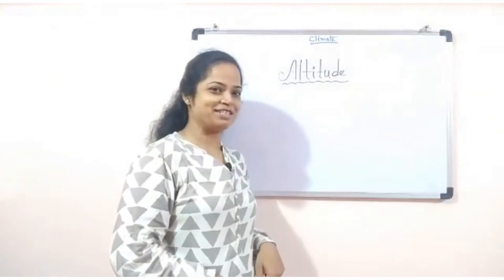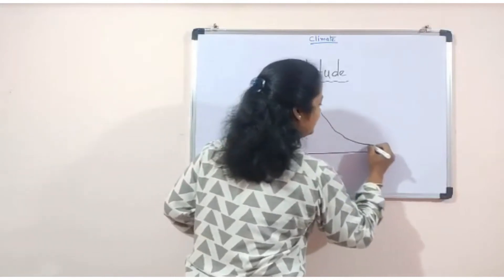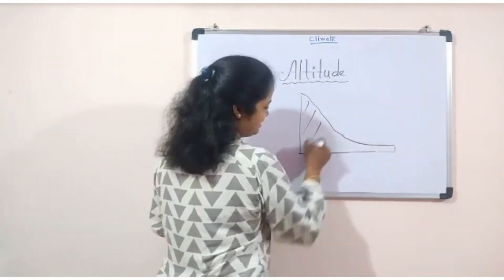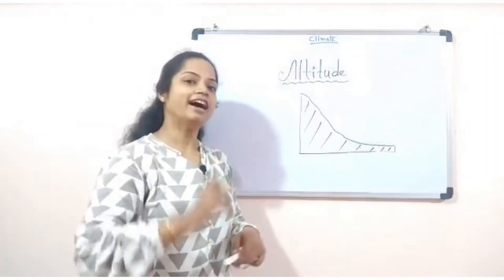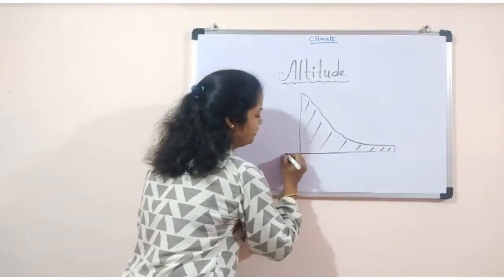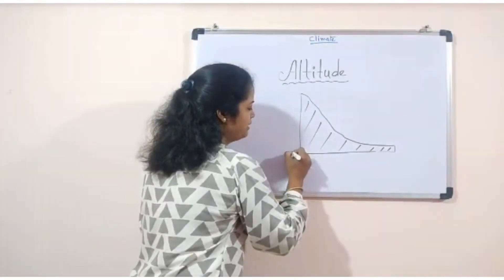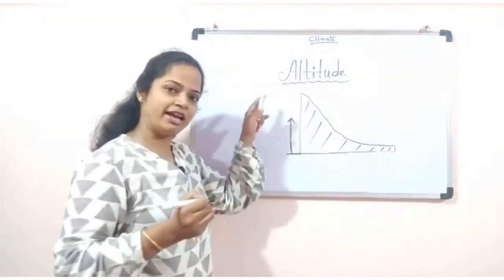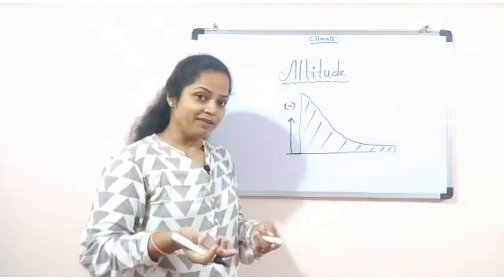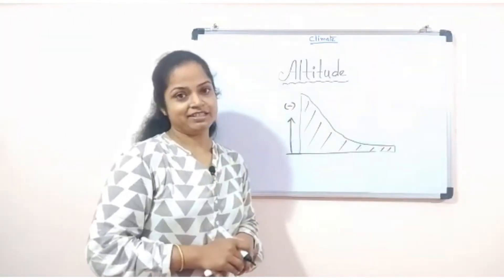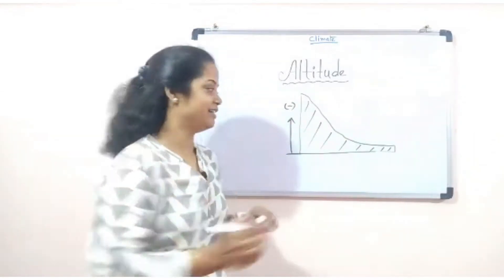Now let's understand altitude. For altitude, we need to draw a diagram. We measure altitude from the standardized sea level. As we go higher from sea level, the temperature will definitely go down. The reason is atmospheric density — the higher we go, the atmospheric density gradually decreases.